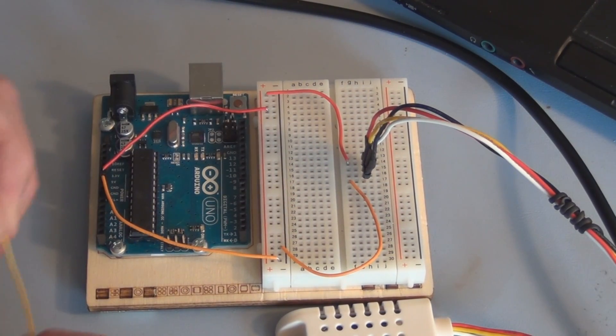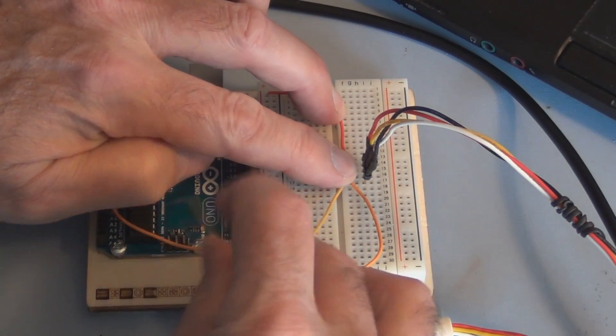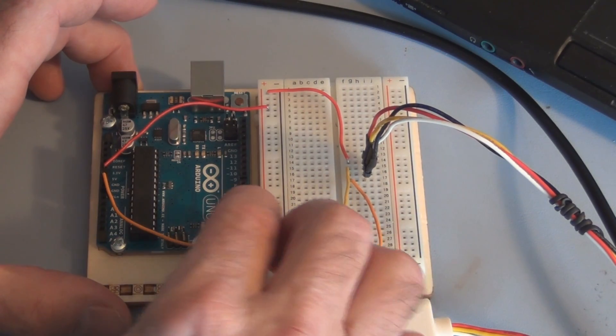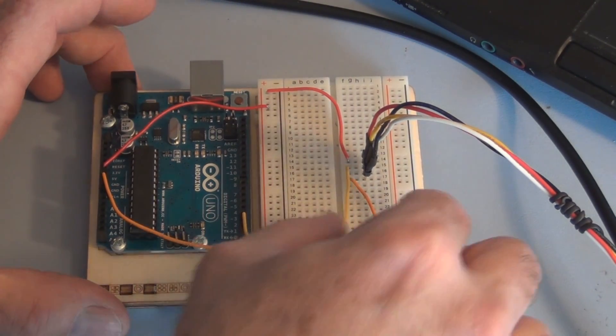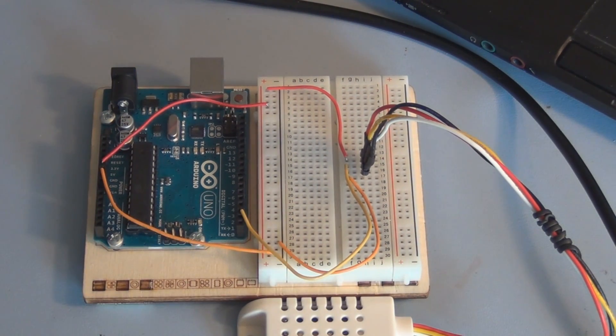And the data pin we're just going to hook up to pin 2 on the Arduino. 0, 1 and 2. That'll be the data input. And that's it. Pretty simple circuit. The rest is accomplished with the software.